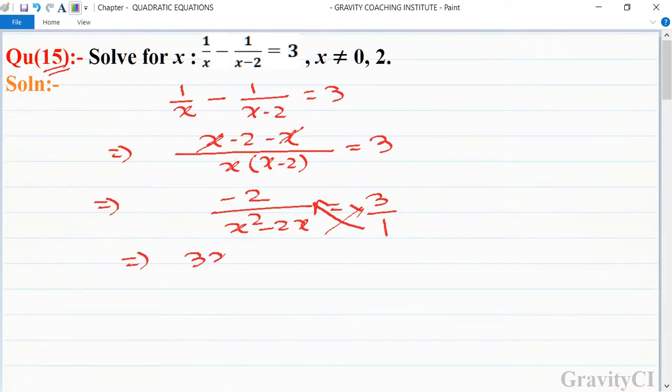So this implies that 3x squared minus 6x plus 2 is equal to 0.